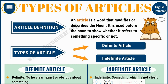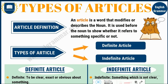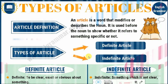We have two types — عنا نوعين. Types of articles: we have the definite article and indefinite article. Today we are going to spot the light on the definite article — رح نروح عالأن صلط الضعو على definite article. So let's move to the second slide.